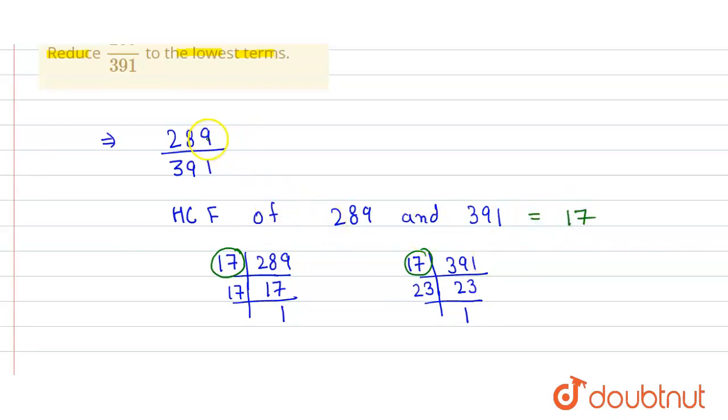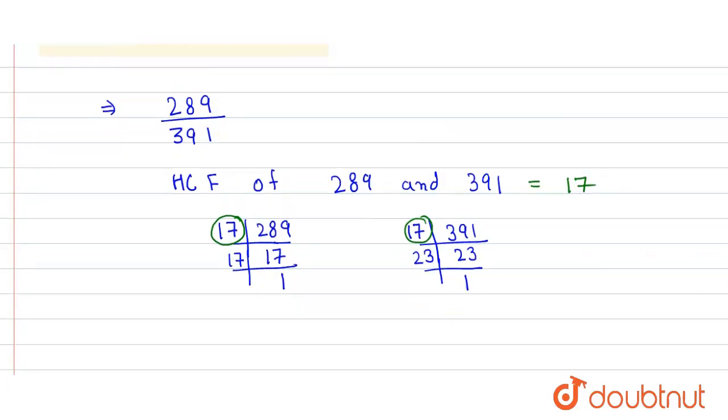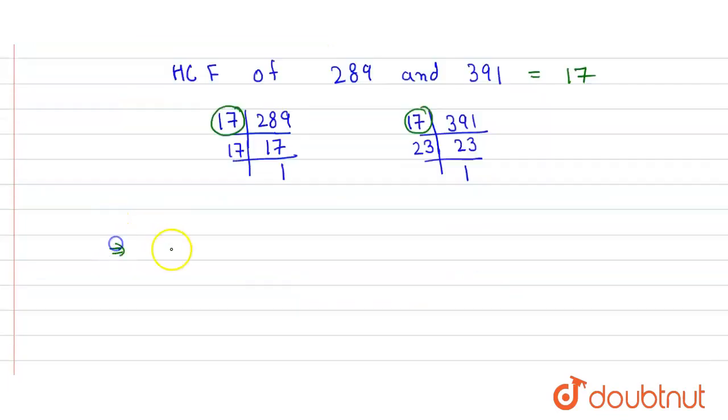Now we divide the numerator by 17 and also divide the denominator by 17. So this equals 289 divided by 17, and 391 divided by 17.